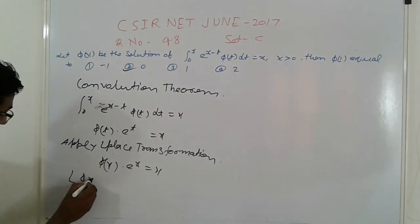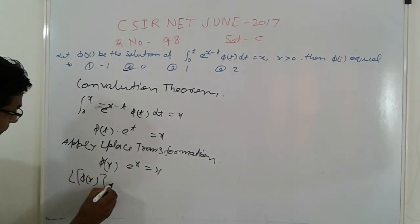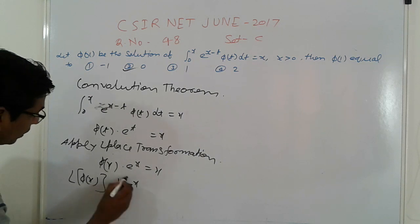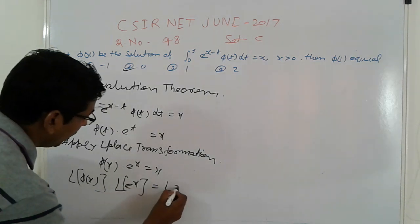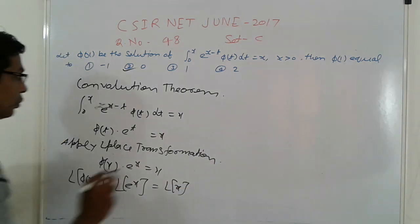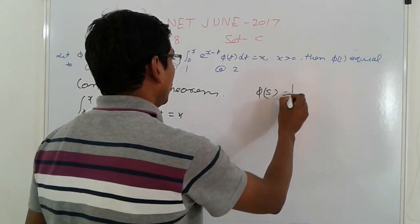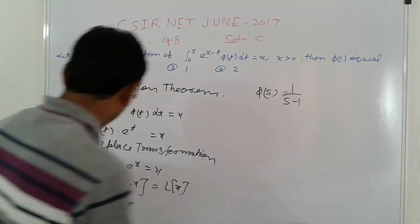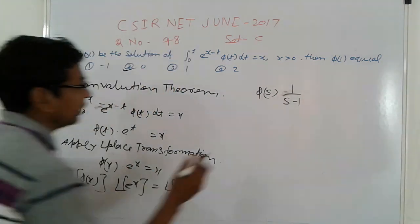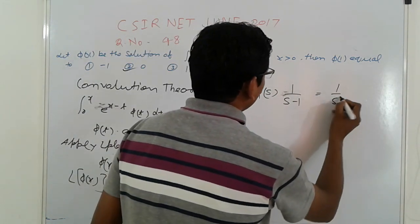Using the property: L{φ(x)} · 1/(s-1) = 1/s². Since L{x} = 1/s².